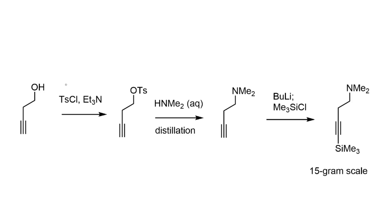For the other component, this commercially available alkyne was reacted with tosyl chloride to afford the tosylate, and then rather than a reductive amination approach, the authors were able to use a simple alkylation to install the dimethylamino moiety. The terminal alkyne was deprotonated with butyllithium and reacted with trimethylchlorosilane to install the silyl protecting group, which is vital for the Larock synthesis requiring a disubstituted alkyne. None of these steps required column chromatography — purification was done by distillation — so the reaction could be carried out at a reasonable scale.